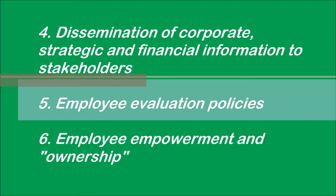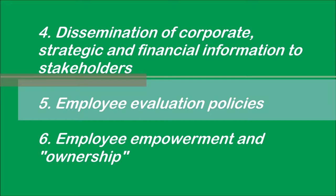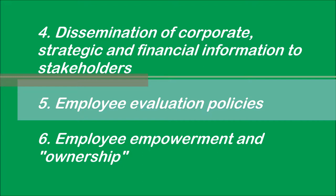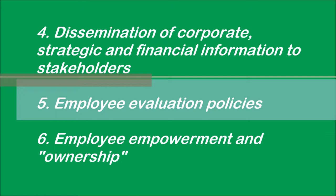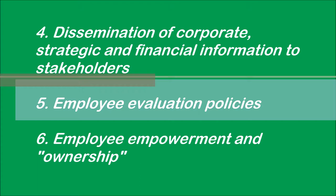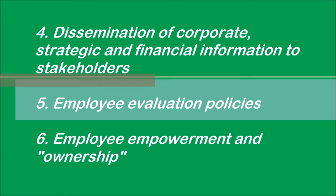The dissemination of corporate strategic and financial information to stakeholders relates to the issue of transparency — the extent to which management regularly shares strategic or financial information with employees, so-called open book management, and how it communicates with stakeholders to maintain transparency of its operations and business performance. In the area of employee evaluations, this refers to the nature and scope of formal procedures and guidelines related to assessing employee performance, for example for salary reviews, promotions, or disciplinary purposes.